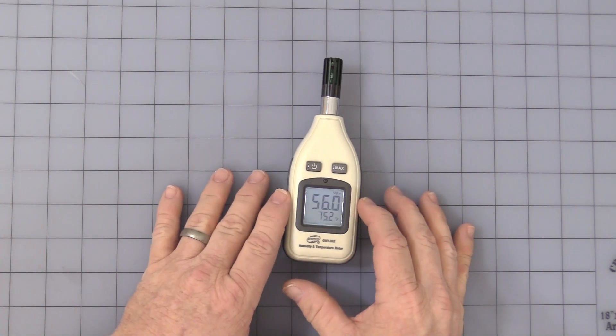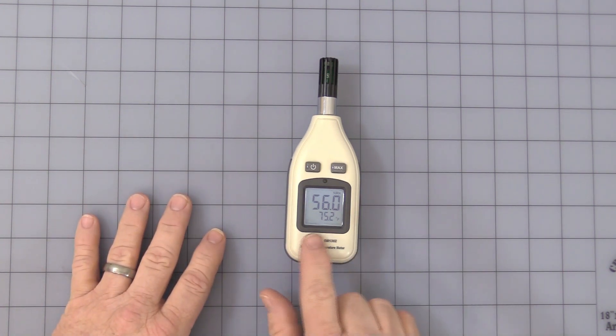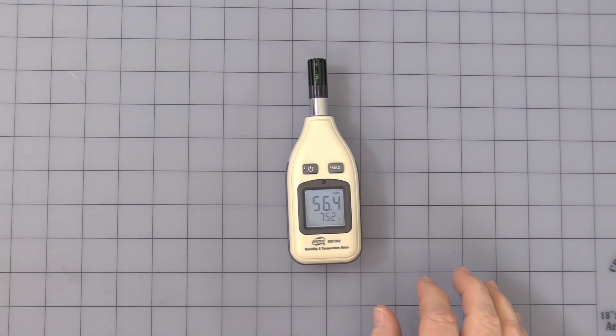I'll go ahead and turn the backlight on just so we can see a little better here. As you see, the top display is relative humidity in percentage. The bottom number is the temperature. You can see it can measure from minus 22 degrees Fahrenheit to 158 degrees Fahrenheit, or minus 30 degrees Celsius up to 70 degrees Celsius.